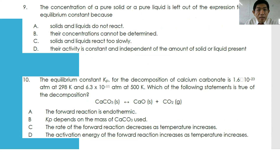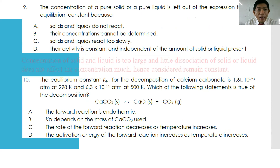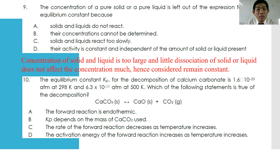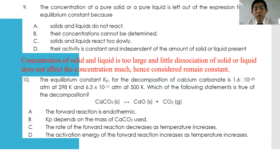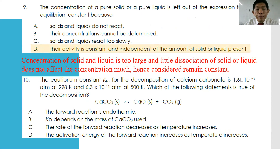For number nine: why is the concentration of pure solid and pure liquid left out of the expression for the equilibrium constant? Because the concentration of solids and liquids is very large, and the small dissociation of solid and liquid does not affect their concentration much — therefore it remains constant. That is why pure solid and pure liquid are not considered when expressing the equilibrium constant.